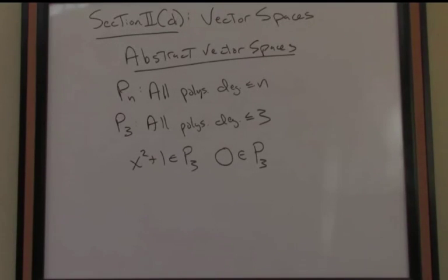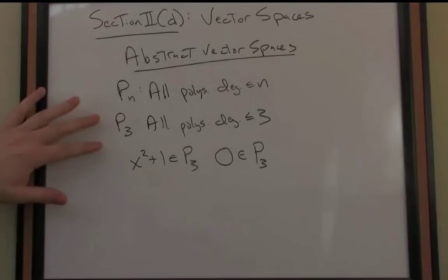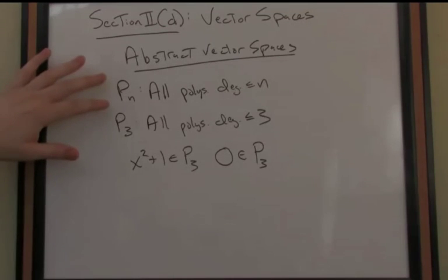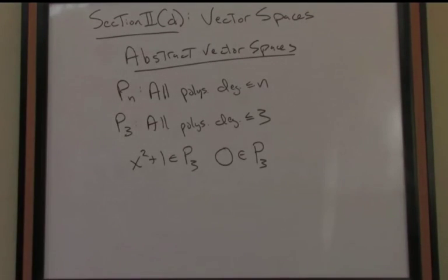Rigorously, you could quite easily show that the ten axioms of a vector space are met by P3, all polynomials of degree less than or equal to 3, or more generally, Pn, all polynomials of degree less than or equal to n.